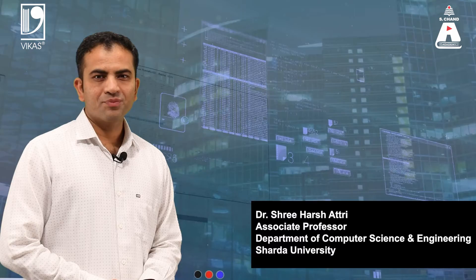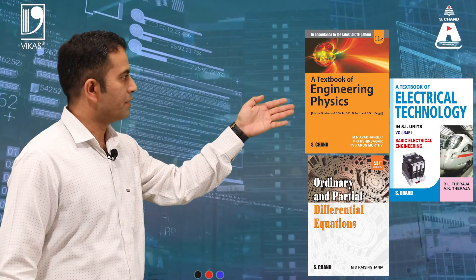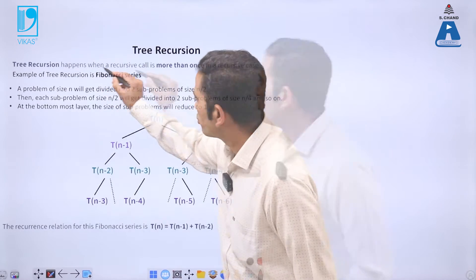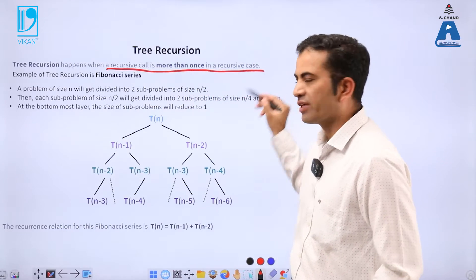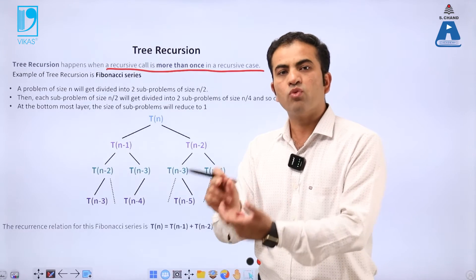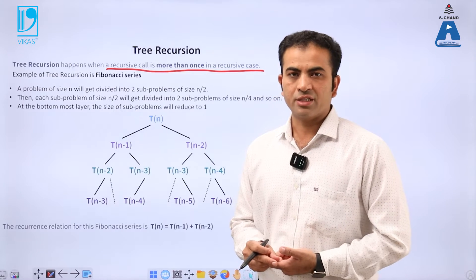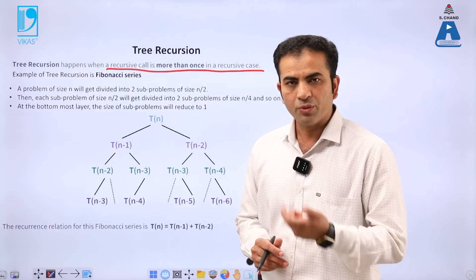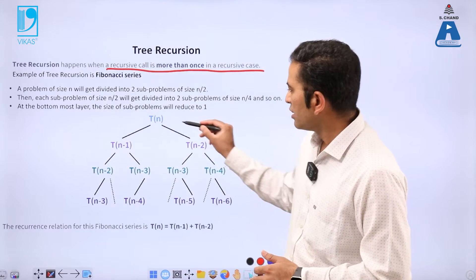I'm Dr. Shriyash Atri, and these are some good books from S.Chan publishing. Tree recursion happens when a recursive call appears more than once in a recursive case. There is one recursive case and inside that recursive case we have more than one recursive call — when this happens, that becomes tree recursion. A very good example to understand tree recursion is the Fibonacci series.